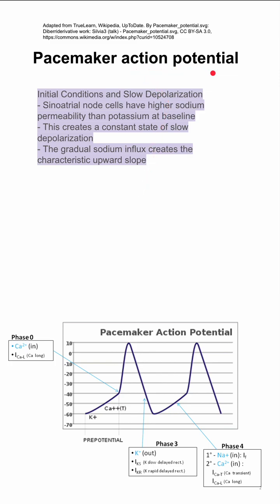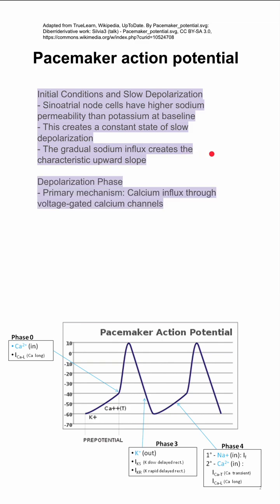This is the action potential in pacemaker cells of the heart. There's a slow depolarization that occurs at baseline. Sinoatrial node cells have a higher sodium permeability than potassium at baseline, so this slow depolarization is caused by sodium influx. This creates a constant state of slow depolarization, and the gradual sodium influx creates the characteristic upward slope.